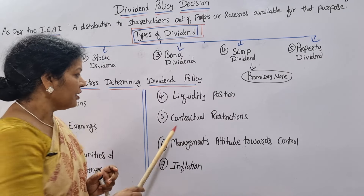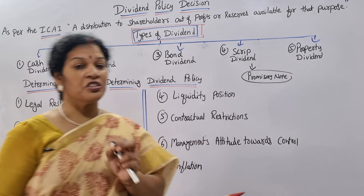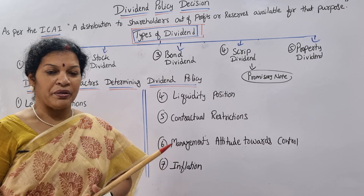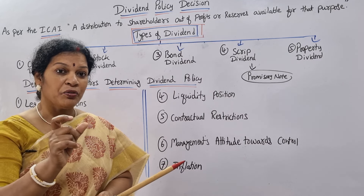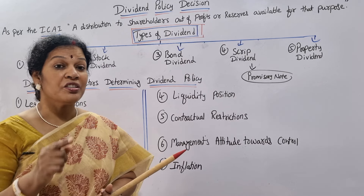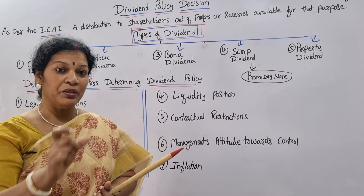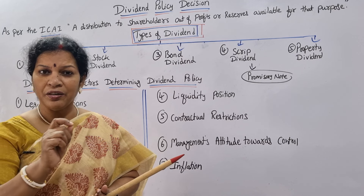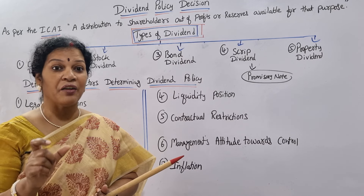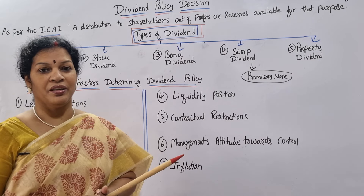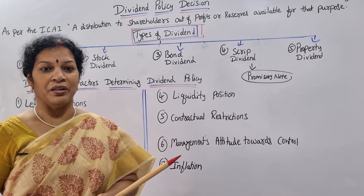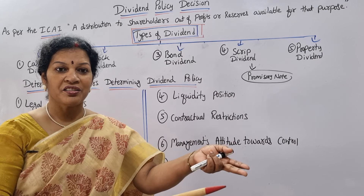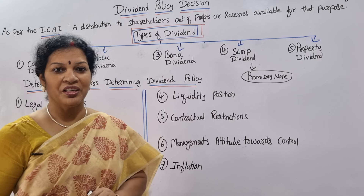The fifth factor is contractual restrictions. Sometimes a company is willing to pay dividend, but must follow legal rules along with loan agreement restrictions. Whatever is written in the loan agreement drafting is applicable — the company has to follow those restrictions. So even if a company wants to pay dividend, contractual restrictions in loan agreements may not allow them to do so.